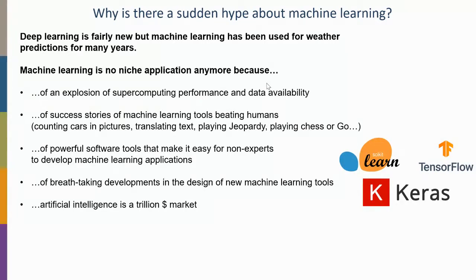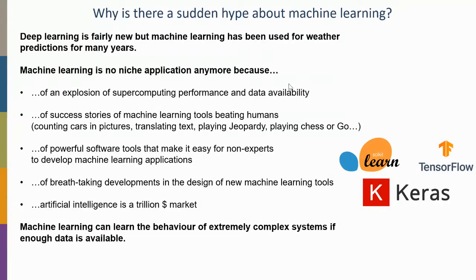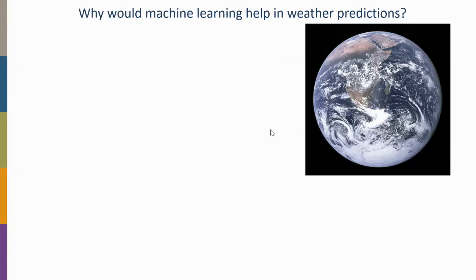Artificial intelligence is a trillion dollar market. This means a lot of technical development, and many smart people leaving university are entering this market. Comparing the trillion dollar AI market with the multi-billion dollar HPC market, and keeping in mind that HPC is important for machine learning, you see that machine learning has an enormous impact on high performance computing right now due to these orders-of-magnitude differences in market value. The key takeaway: machine learning can learn the behavior of extremely complex systems if enough data is available.